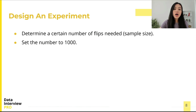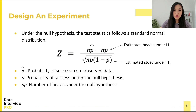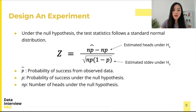The second step is to determine the number of tosses we need to perform the z-test — in other words, how many tosses are needed to conduct the z-test with sufficient power given our selected significance level. For now let's set the number of tosses to be 1,000. Under the null hypothesis, the test statistic approximately follows a standard normal distribution. In the numerator we have n multiplied by p-hat, which is the observed number of successful trials.